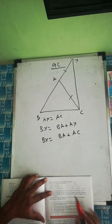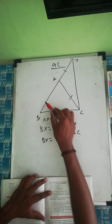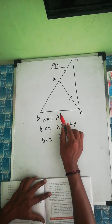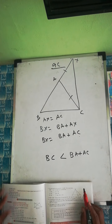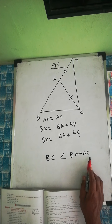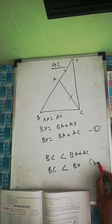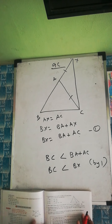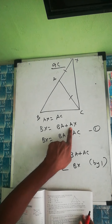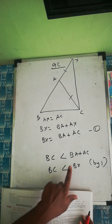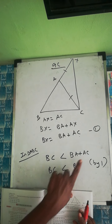So BX equals BA plus AC. By the triangle inequality applied to triangle ABC, BC is less than BA plus AC. Since BA plus AC equals BX, we can write BC is less than BX. Thus the proof is complete: AX equals AC is given, BX equals BA plus AX, and substituting AX with AC gives BX equals BA plus AC, so BC is less than BX.